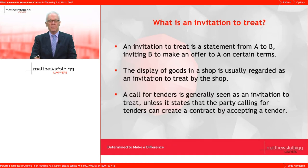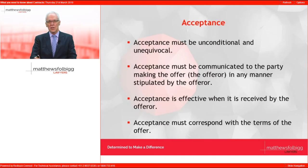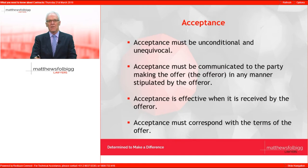The next element is acceptance. Acceptance must be unconditional and unequivocal. It can occur through words or conduct — for example, through the performance of a contract. Acceptance must be communicated to the offeror in any manner stipulated, such as by written notice or email before a certain date. Acceptance is effective when it is received by the offeror. A counteroffer on different terms is not acceptance and will be regarded as a new offer.